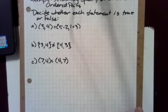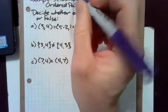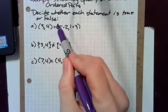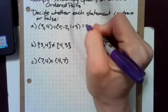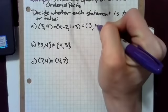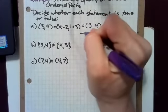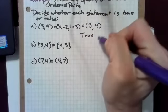Example: Determining equality of sets and ordered pairs. We're going to decide whether each statement is true or false. First we ask whether the ordered pair (3,4) is equal to the ordered pair (5-2, 1+3). To figure that out, we just do the arithmetic. 5 minus 2 is 3 and 1 plus 3 is 4, so this is true because 5-2 equals 3 and 1+3 equals 4.